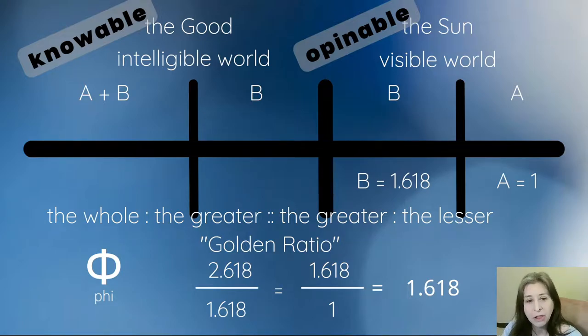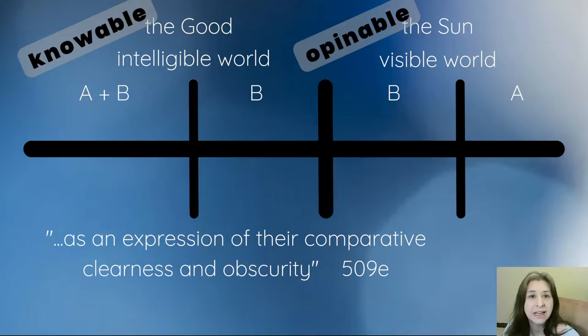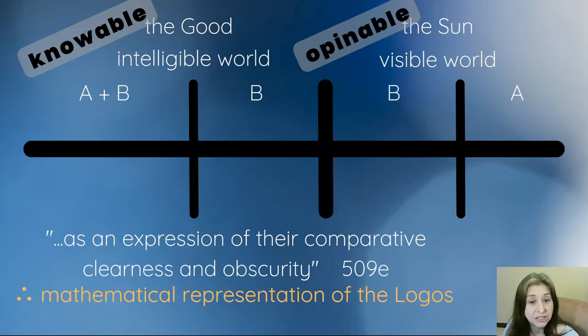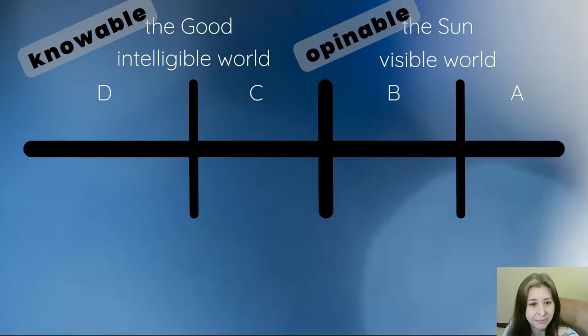While all of that can be quite interesting, our question is: why did Plato use it? Why is it here? He tells us that the length of each section is an expression of their comparative clearness and obscurity. What that means for us, since we're making analogies here, is that this is a mathematical representation of the logos. That's really what the divided line is about. Then you can ask yourself, especially once we fill in all the sections, why are those two middle sections equal? There's something about them that makes them equal in clearness and obscurity, even though one is in the intelligible world and the other is in the visible world. That's one of the puzzles we have to work out. Plato does not tell us directly.